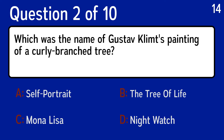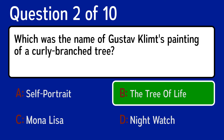Question 2: which was the name of Gustav Klimt's painting of a curly branched tree? The correct answer is B, the Tree of Life.